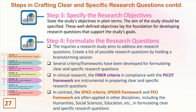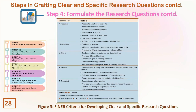Figure three shows the FINER criteria for developing clear and specific research questions. In crafting clear and specific research questions, researchers should ensure that the study is feasible, interesting to researchers and the academic community, novel — meaning it shouldn't just replicate previous works but should confirm, refute, or extend previous findings — ethical, and relevant to the field.